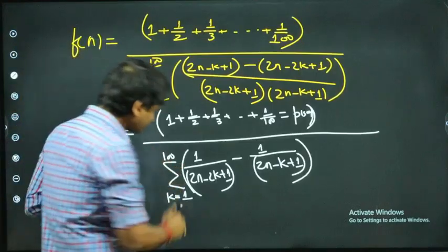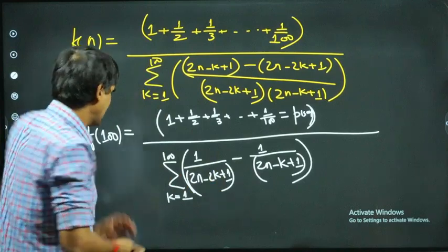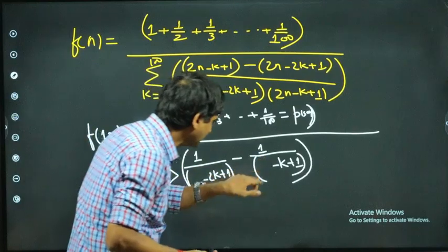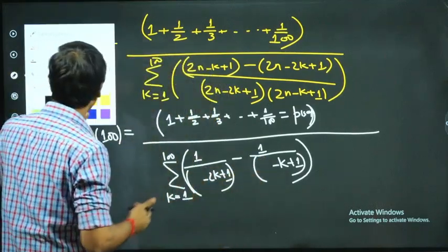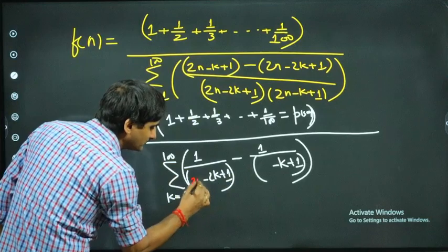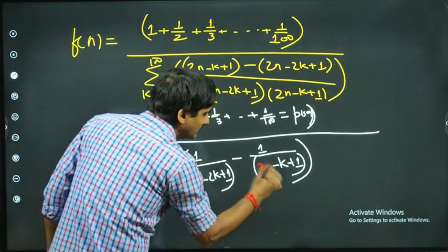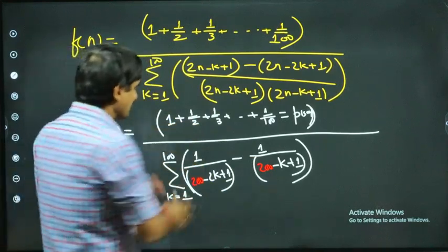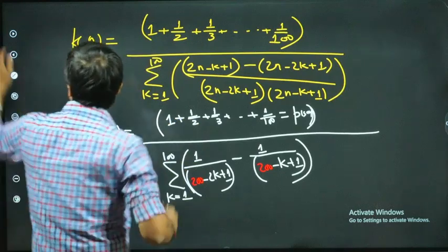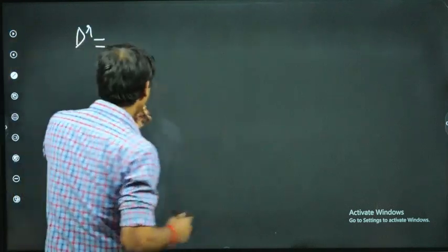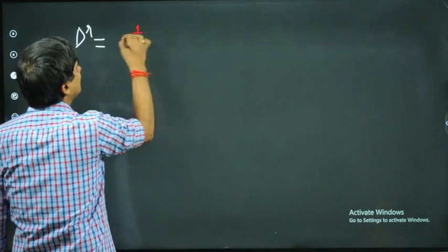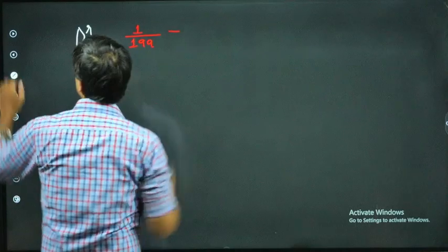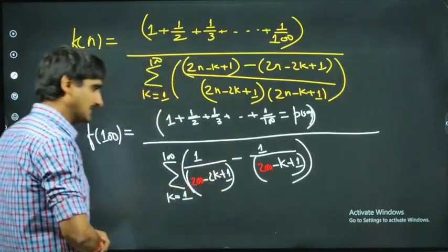Since n = 100, we write 2n = 200 for a better comparison with the numerator terms. When k = 1, the first term gives 1/199 and the subtracted part gives 1/200. Let's verify: 200 - 2 = 198, so we get 1/199 minus 1/200.